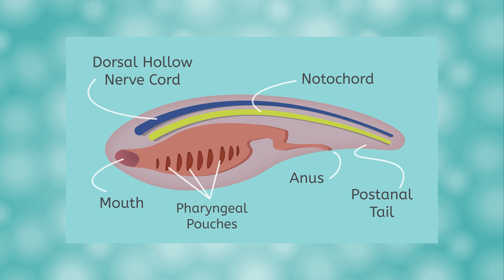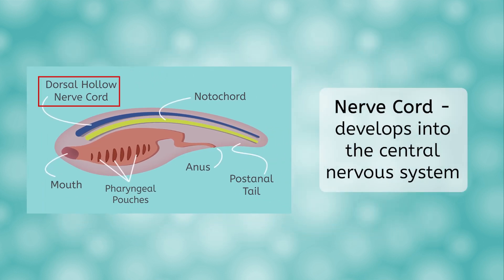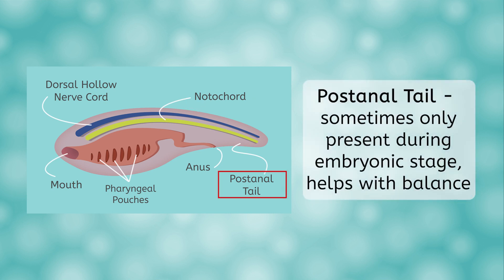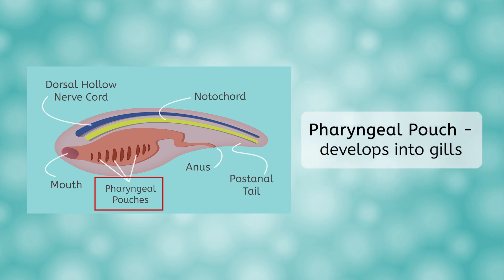Let's spend a few minutes defining chordates and vertebrates before we hop into our fish lesson. Chordates have four main anatomical features that define them: a nerve chord, which runs along the back of the animal and develops into the central nervous system; a notochord, a long flexible rod made of a substance similar to cartilage that provides skeletal support; a post-anal tail, sometimes only present during the embryonic stage like humans — for fish this tail helps their swimming, and in terrestrial animals it helps with balance; and finally, a pharyngeal pouch, which is what develops into the gills in fish, and in humans, like the tail, is only present during the embryonic stage.